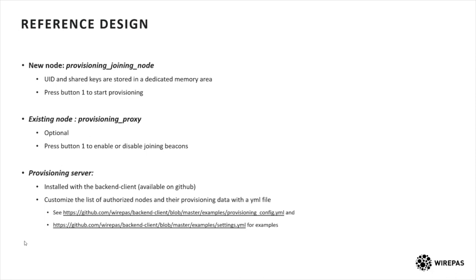For the provisioning server, everything is available in the backend client repository. Once you have installed the backend client you have nothing more to do — it is installed at the same time. If you click on the link provided, you will find example configuration files that you can customize: which MQTT broker and which backend to connect to, and also examples of how to add the unique ID of each node that will be accepted by the provisioning server along with all the provisioning data that will need to be sent.